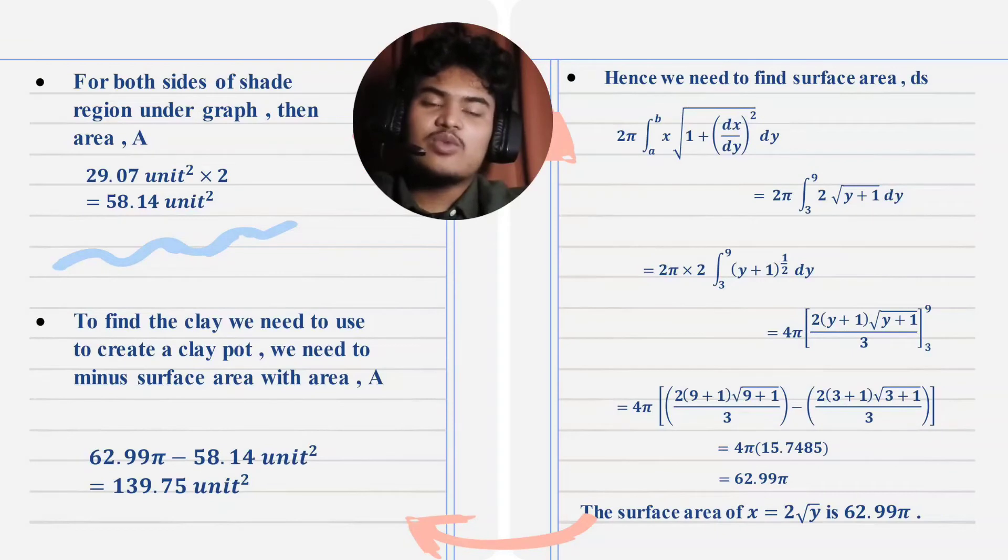29.07 unit squared is the area of one side of the graph only. So, for the total area of the graph, 29.07 unit squared times 2, we will get the total which is 58.14 unit squared.